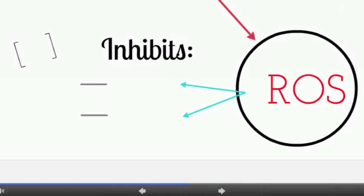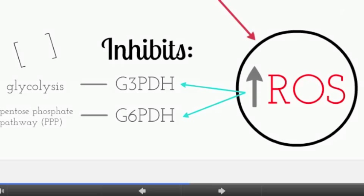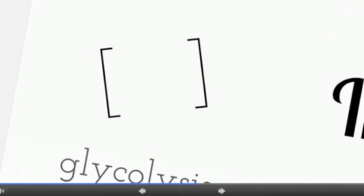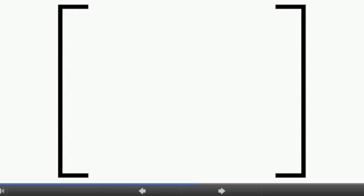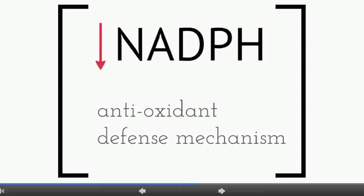Overproduction of reactive oxygen species inhibits two major rate-limiting enzymes: glyceraldehyde-3-phosphate dehydrogenase in glycolysis, and glucose-6-phosphate dehydrogenase in the pentose phosphate pathway. Consequently, this decreases the production of reducing equivalent NADPH, which is needed for glutathione peroxidase and glutathione reductase reactions. As a result, the cell's natural antioxidant defense system is unable to degrade reactive oxygen species to water and oxygen.